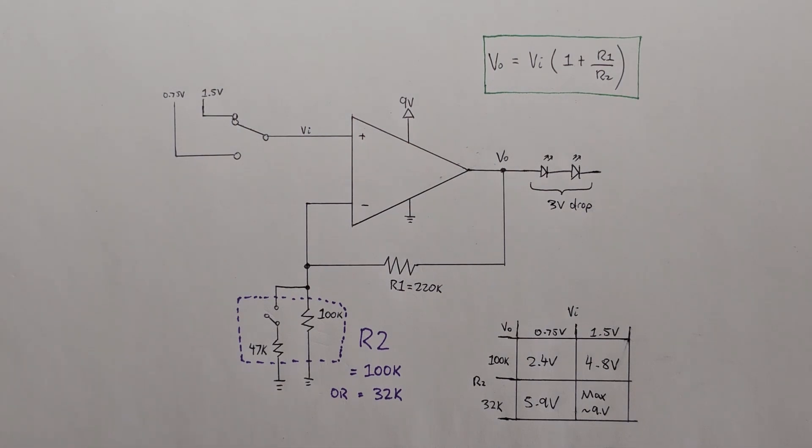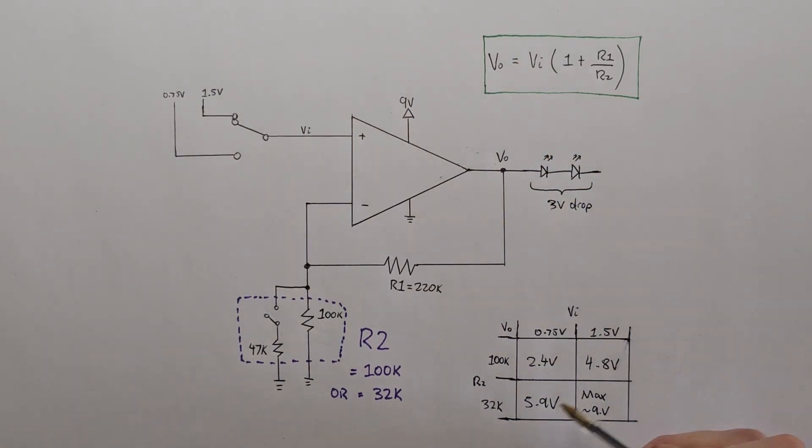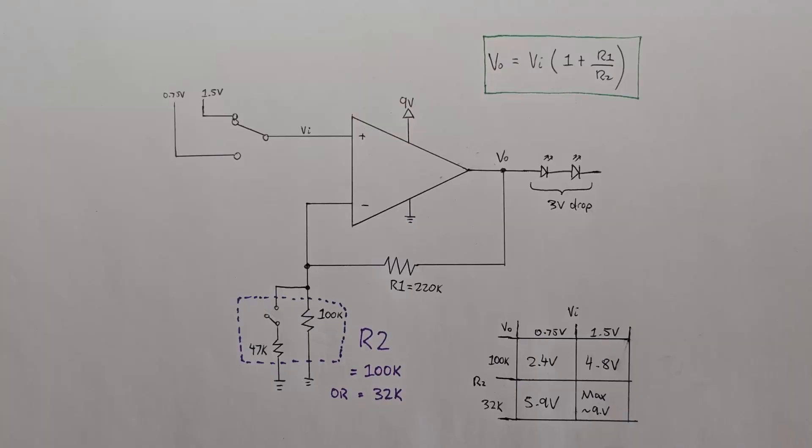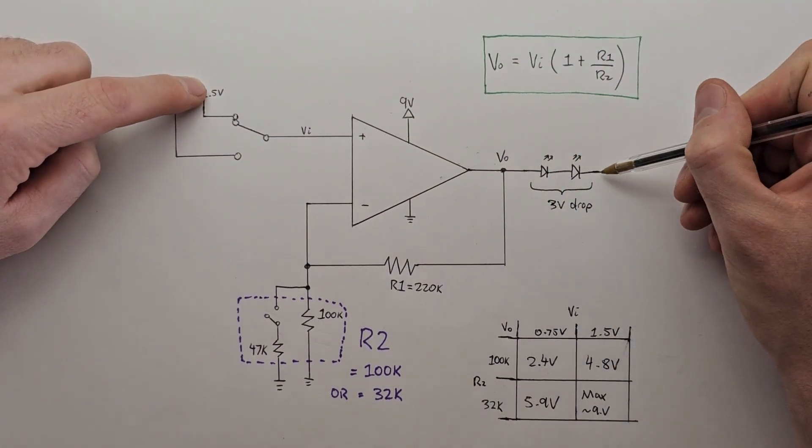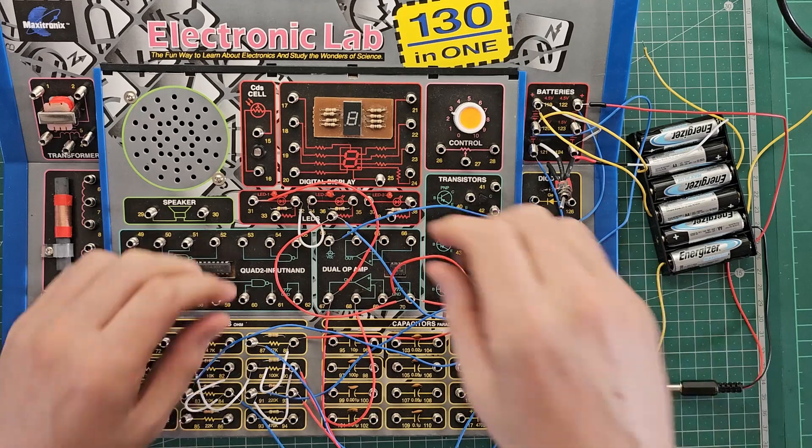So if we match this up with the behavior we saw, 2.4 volts is not enough to turn on the LEDs. 4.8 and 5.9 are both enough, and when we flick both switches we get maximum voltage and that's why the LEDs turn on a bit brighter. This demonstrates how we can take 1.5 volts or less on the input and turn it into more than 3 volts on the output to power two LEDs in series. Anyway, time for the next circuit.